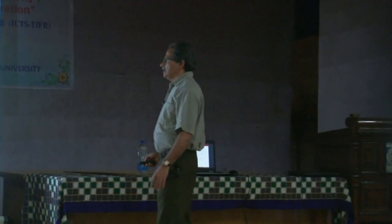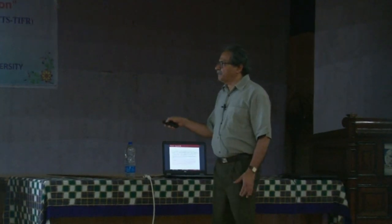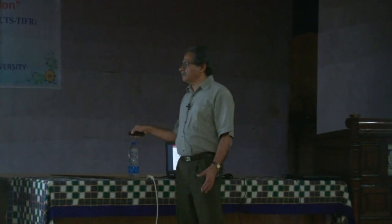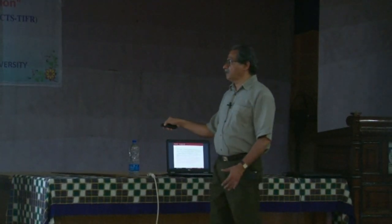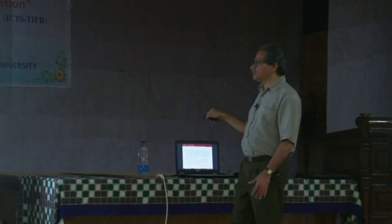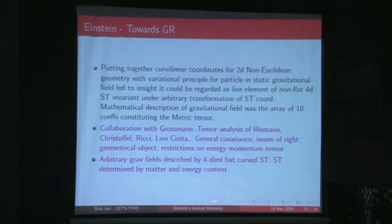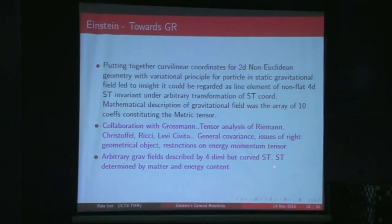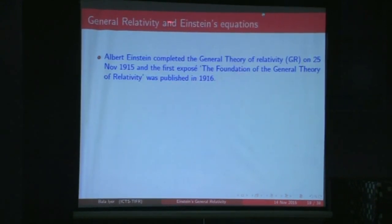At various stages Einstein realized that the geometry was already there — his mathematical friend Grossmann told him about the tensor analysis work of Riemann, Christoffel, Ricci, and Levi-Civita, and it was putting all these together that led him to the general theory of relativity. We can say that arbitrary gravitational fields are described by four-dimensional curved spacetime, and spacetime is determined by the matter and energy content — this essentially is what we call Einstein's equations.